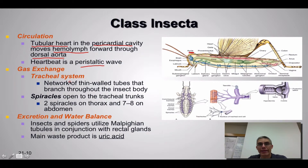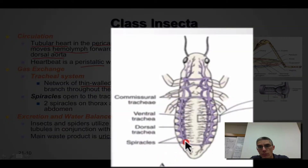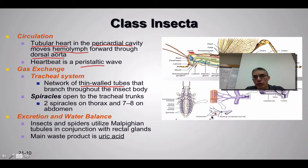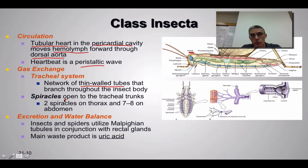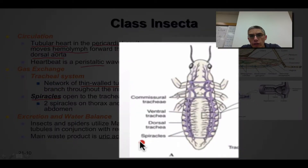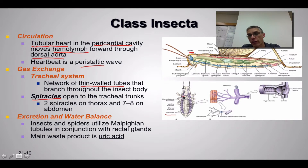For the respiratory system, gas exchange is similar to what we've seen in arachnids and crustaceans. Insects have a tracheal system — the trachea are simply a series of very thin-walled tubes that branch throughout the body. You can see these thin-walled tubes in the abdominal region and thorax region, with a blown-up view shown here. To gain access to these trachea, there are openings called spiracles — very tiny holes in the abdominal region, seven to eight depending on the insect, and two in the thorax region.